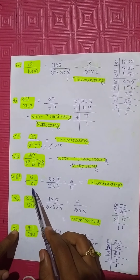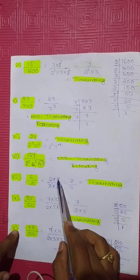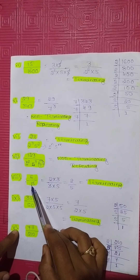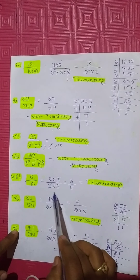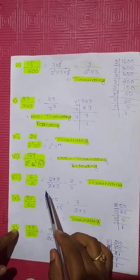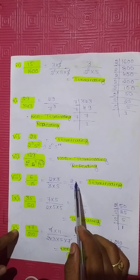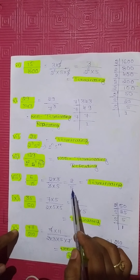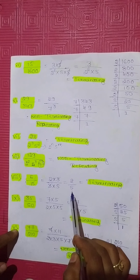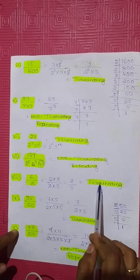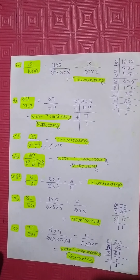Eighth question: 6 divided by 15. 6 can be written as 2 into 3; 15 can be written as 3 into 5. The 3 and 3 get cancelled, leaving 2 divided by 5. Since only 5 is in the denominator, this is a terminating decimal.